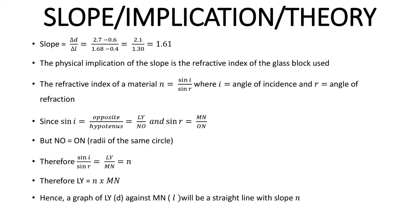The theory here is that the refractive index of the material, which we know from Snell's law, is the ratio of the sine of the angle of incidence to the sine of the angle of refraction. And then if I substitute from the circle that we drew, we can get that LY over NO is sine I, and MN over ON is sine R. But if I now put it into this formula I will get that refractive index is equal to LY over MN. Meaning that if I plot a graph of LY against MN, which is our D and L, we are going to get a straight line whose slope is the refractive index.